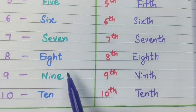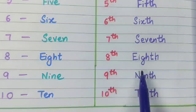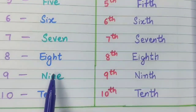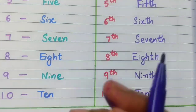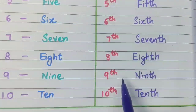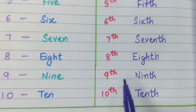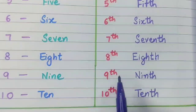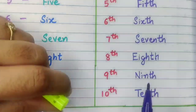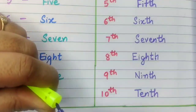I hope all the cardinal and ordinal numbers are clear to you. Cardinal numbers give you the number of something, and ordinal numbers give you the position of something. Thank you, children. Bye.